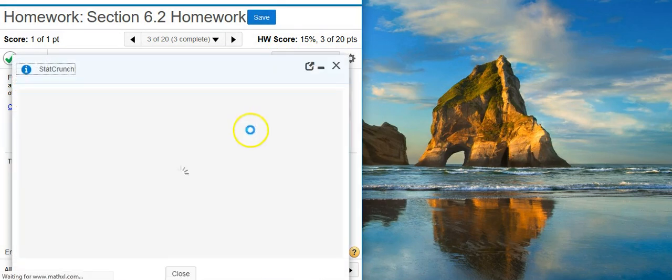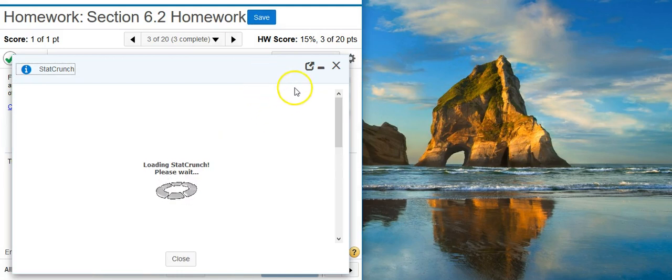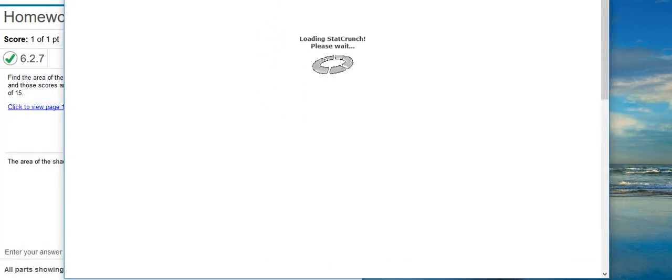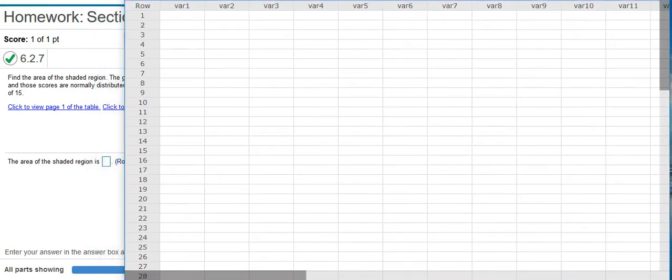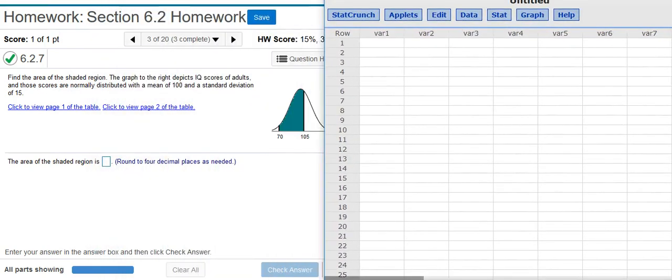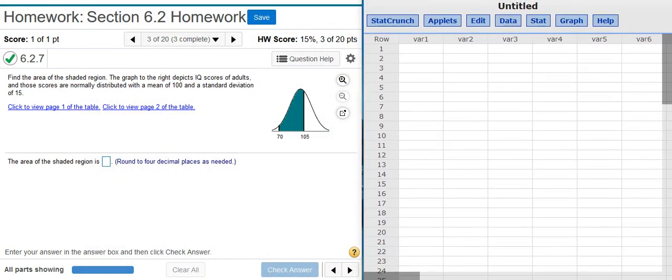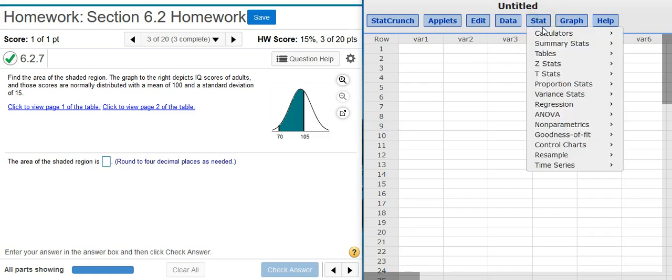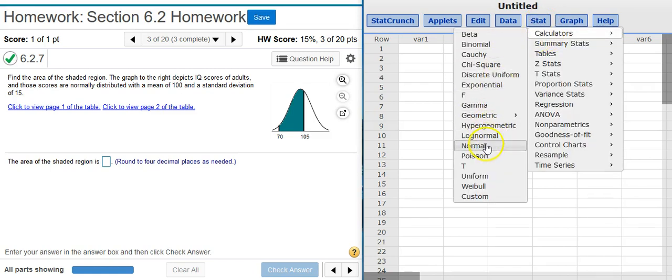So, I'm going to open up StatCrunch, and I don't necessarily need anything in the data table. I just need the functionality that StatCrunch provides, so I can get into that calculator for my distribution. It says the scores are normally distributed, so I want the normal calculator. To get that, I go to Stat, Calculators, Normal.